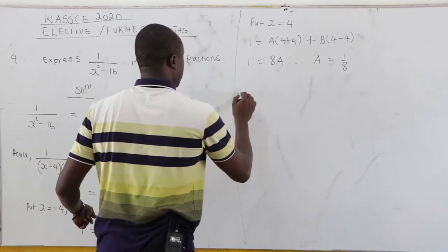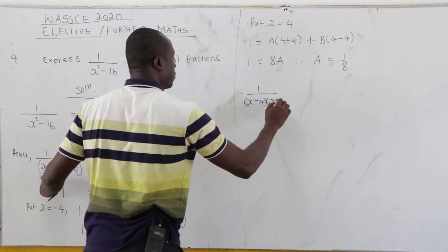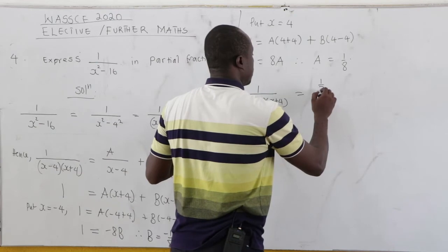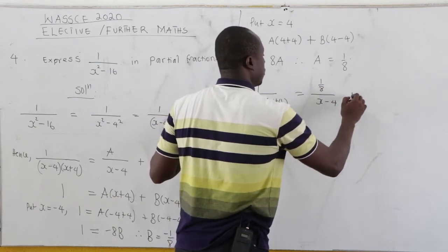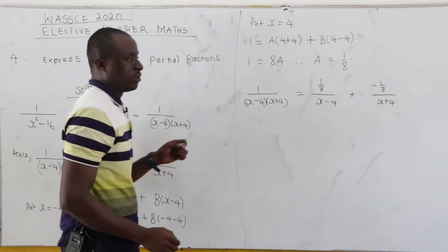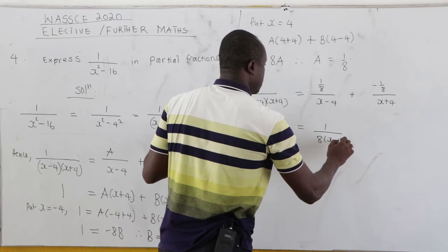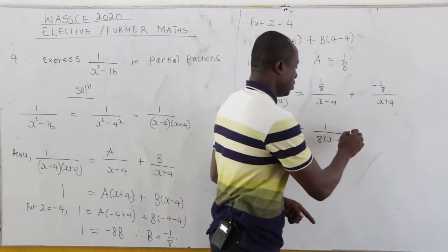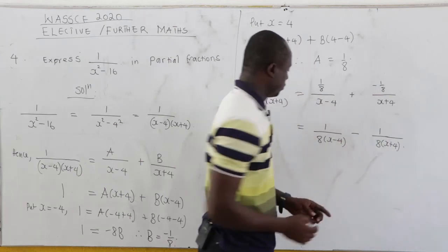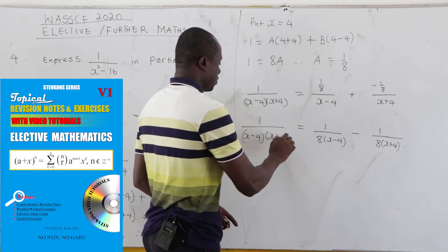Now hence, our 1 all over x minus 4, x plus 4, is the same as A over x minus 4. But what is our A? Our A is 1 over 8. So we have 1 over 8 all over x minus 4. And we have negative 1 over 8 all over x plus 4. Now the fraction of the numerator can come down. So we have 1 all over 8 times x minus 4 minus 1 over 8 times x plus 4. So that is 1 all over x minus 4, x plus 4.